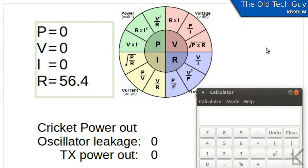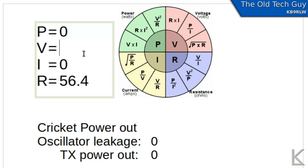Well now that I've made my measurements I'm ready to calculate the power coming out of the Cricket. So we know that our resistance is 56.4 ohms. Now the voltage that I measured when I was transmitting was 17 volts peak to peak. I can't really use that to calculate power.